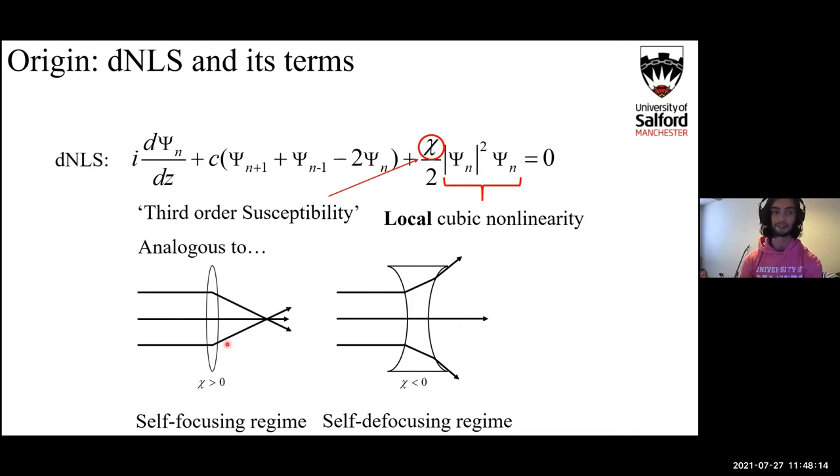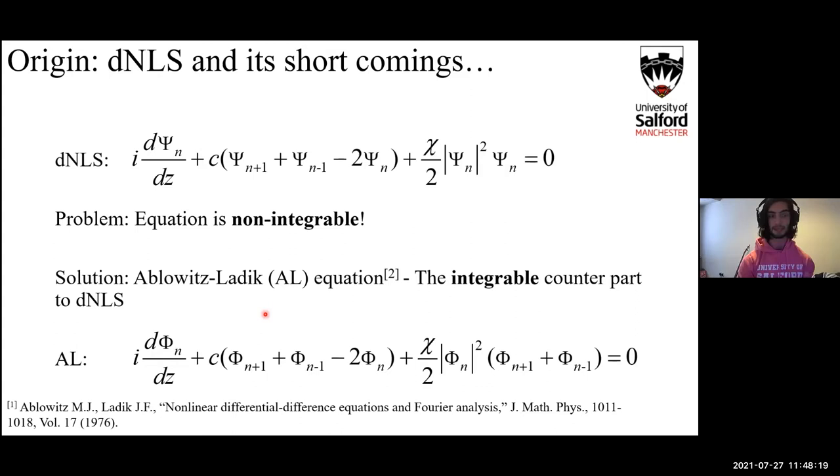The problem with the dNLS, however, when it comes to modeling is that it isn't integrable. Why that's problematic is because you can't get exact solutions for certain things.